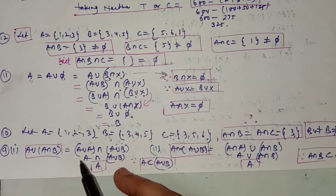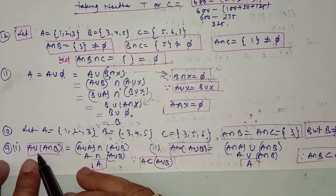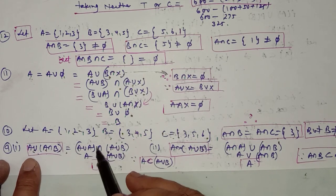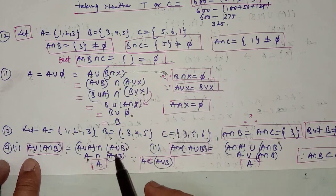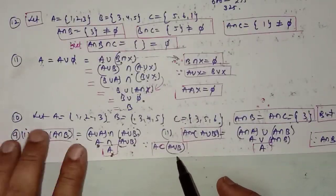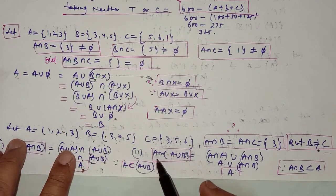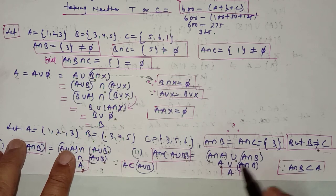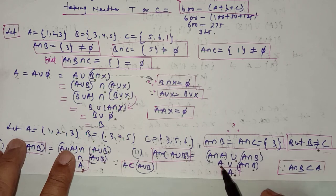In question number 9, using properties of sets, prove A∪(A∩B) = A. Starting with the left-hand side: A∪(A∩B) = (A∪A)∩(A∪B) by distributive law. Since A∪A = A, this gives A∩(A∪B) = A, because A is a subset of A∪B. For the second part: A∩(A∪B) = (A∩A)∪(A∩B) = A∪(A∩B). Since A∩B is a subset of A, this equals A.